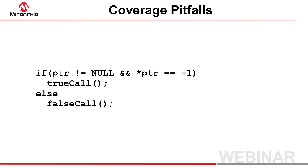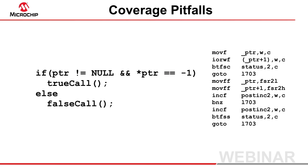For example, the C language not only allows, it actually stipulates, that when expressions in a statement are logically anded together, the right expression must not be executed if the left expression evaluates to be false. So even though you might see your program reach such a statement, much of the code associated with it might not have been executed. Thus, you need an easier and more robust way to determine code coverage.